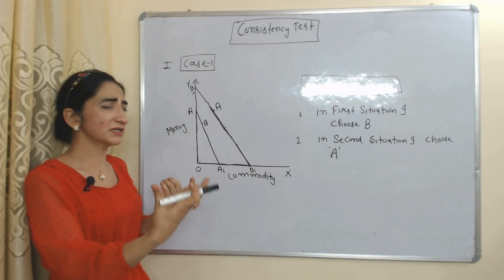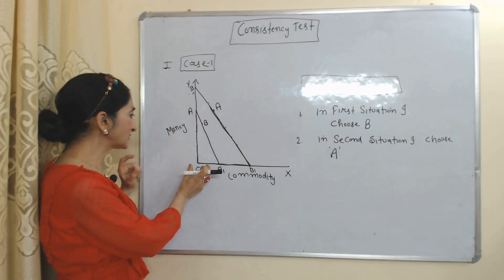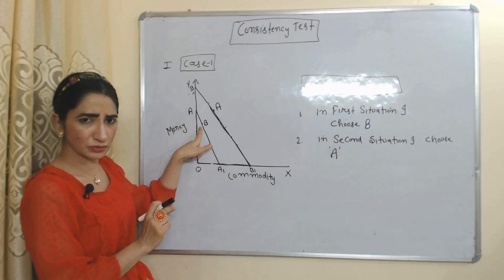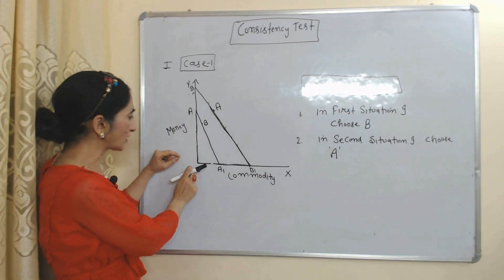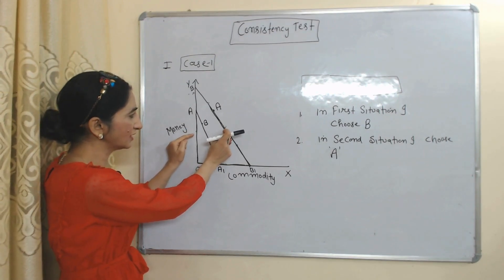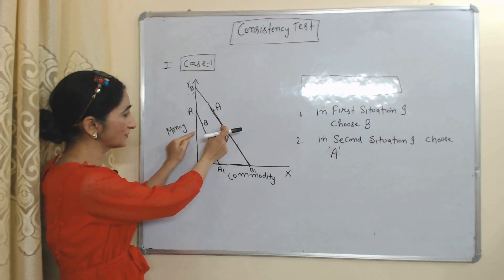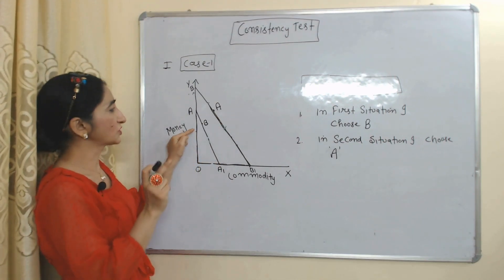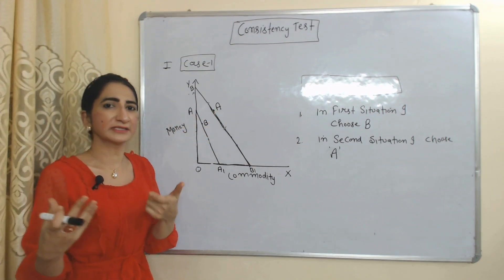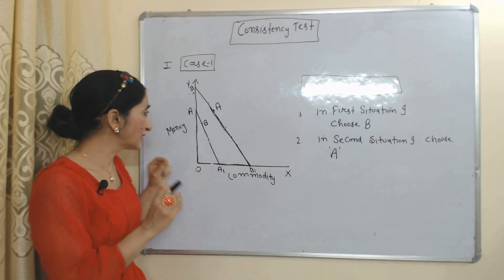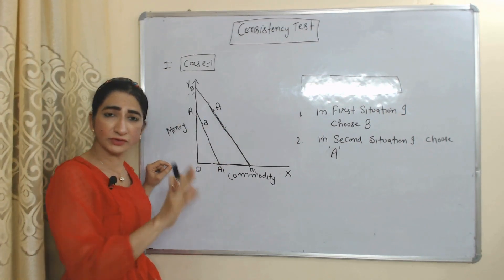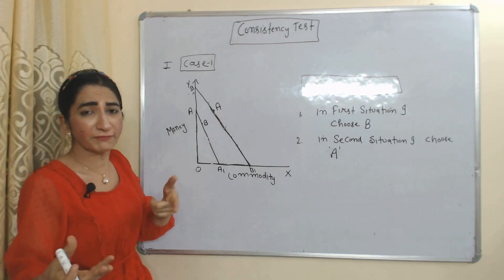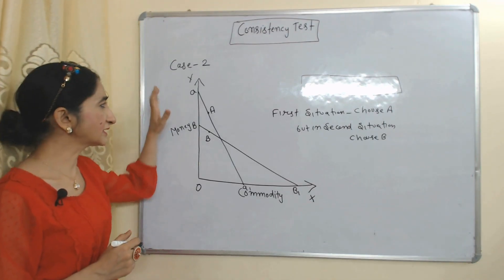In first situation, represented by triangle OA-A1, the consumer chooses B because A is not available. In second situation, represented by triangle OB-B1 — which is inside the first triangle — both options A and B are available, and the consumer chooses A. This behavior is consistent because in the first situation A was not available so B was chosen, but in the second situation when both options were available, only A was chosen since A is the first best option.